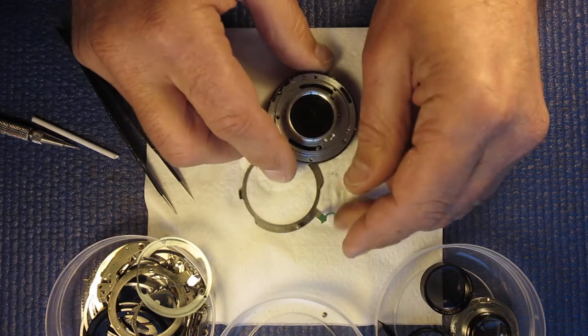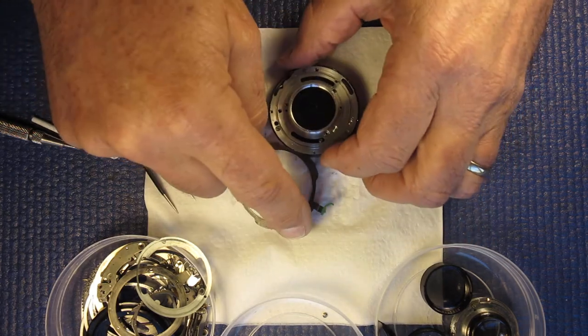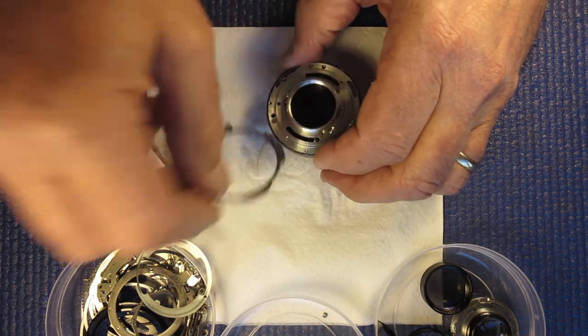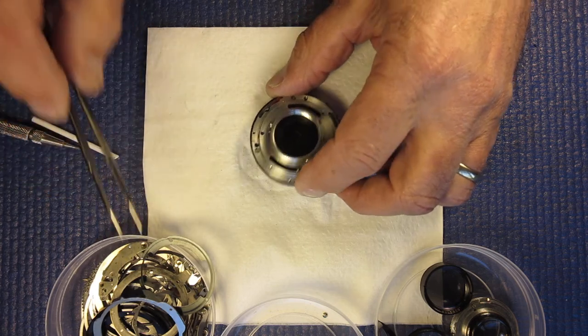This ring sets the self timer, pulls the self timer with that post there. Also sets the flash sync speed.